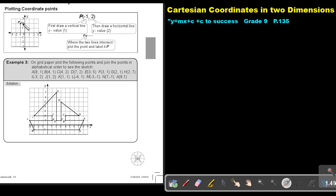Make a small cross. I prefer a small cross because sometimes students make the point so big and it's not very accurate. Rather just make a small cross and label it P. Where the two lines intersect, plot the point and label it P.